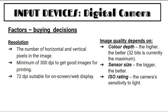Factors to consider when buying a camera: number of horizontal and vertical pixels; a minimum of 300 dpi for good print images, 72 dpi for on-screen or web display. Image quality depends on color depth — higher is better, currently 32-bit maximum. Sensor size — bigger is better. ISO rating — the camera's sensitivity to light.